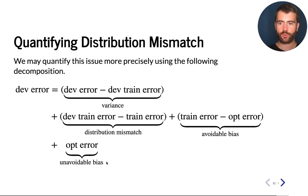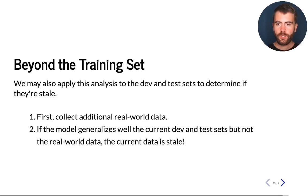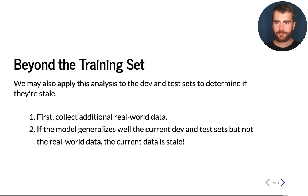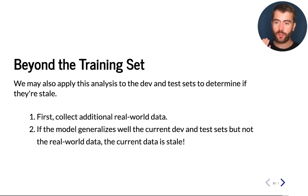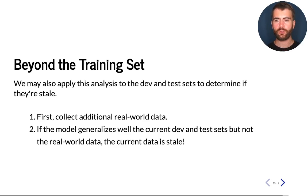This is a more quantitative way of formulating what was just described. Even though this idea has been described in the context of training and development sets, we can also use it in other contexts — for example, to detect whether the development and test sets are stale, in the sense that they are no longer representative of the production data distribution.